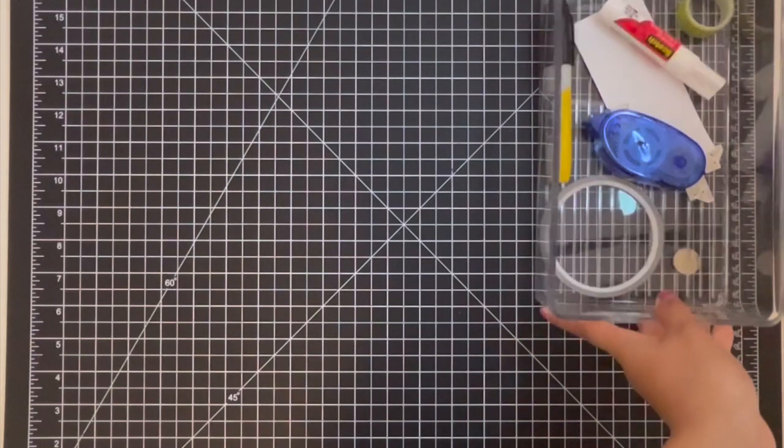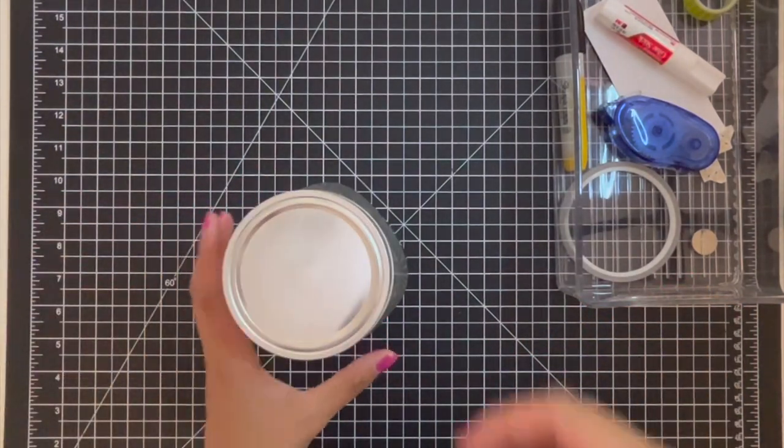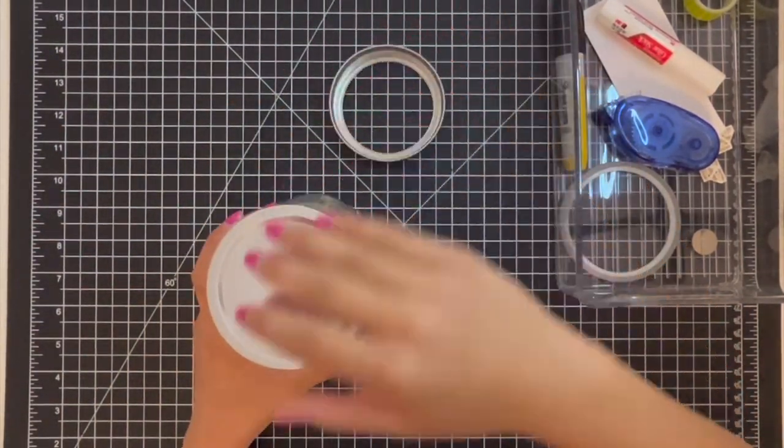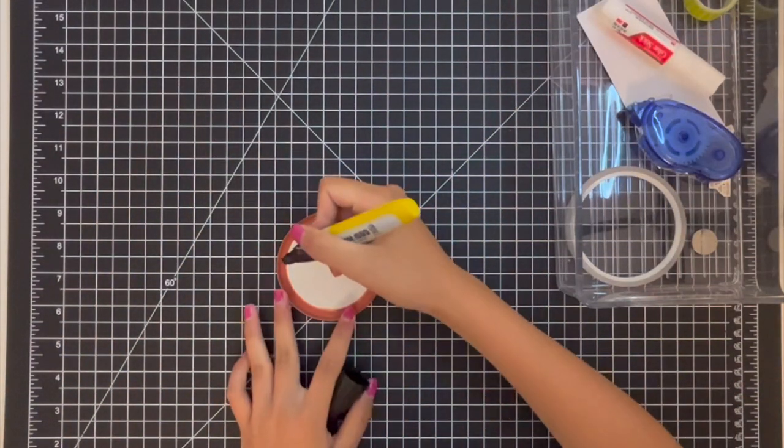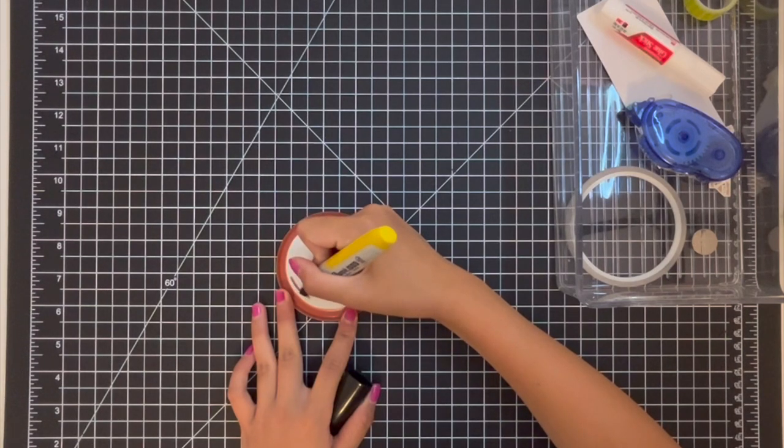Once you're satisfied with the placement inside the jar, it's time for this super cool part: constructing the circuit on the cap that will allow our mason jar to light up and come to life. First separate the two parts of the cap.